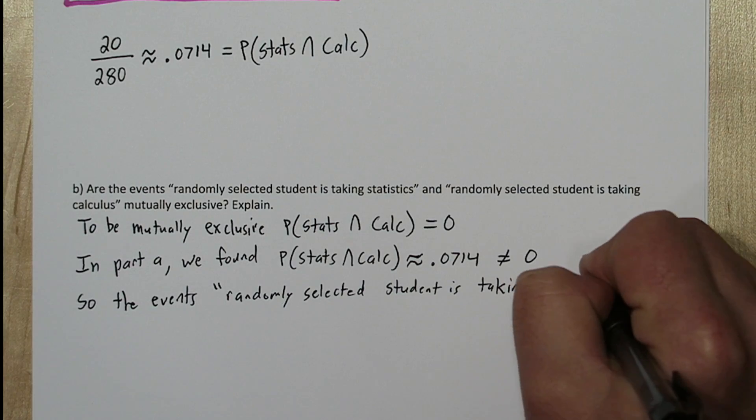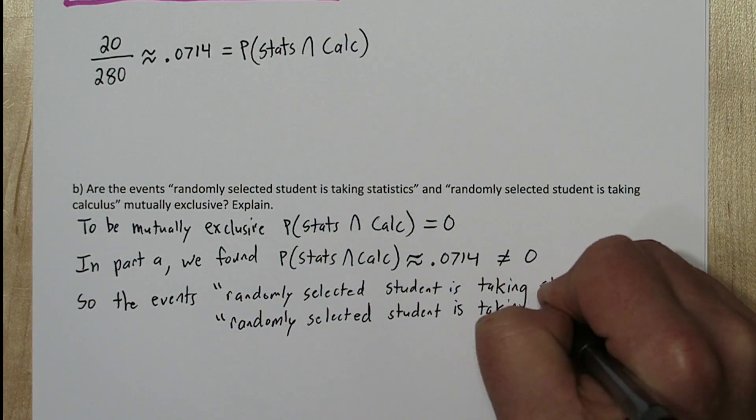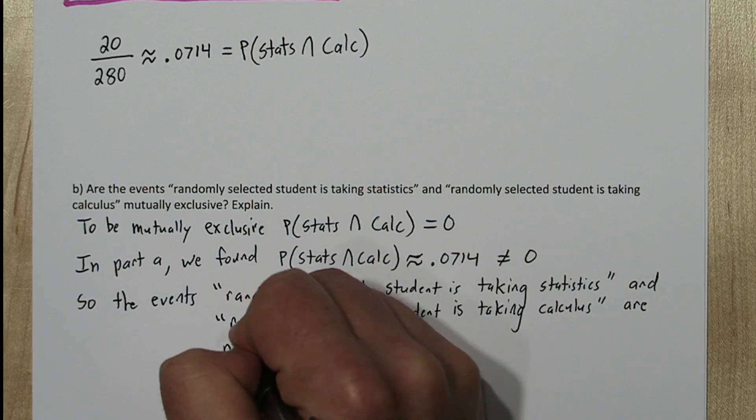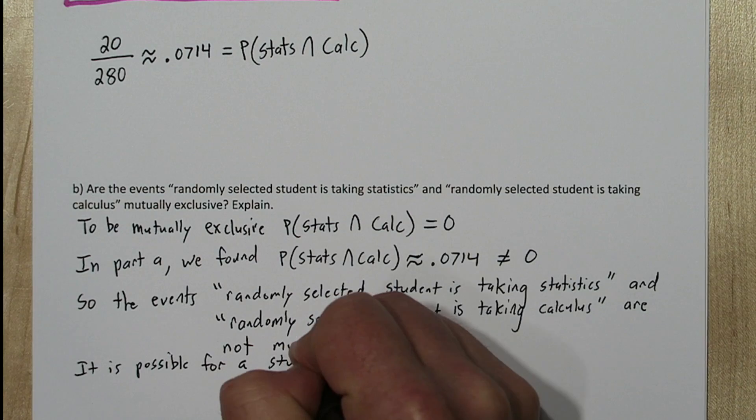So the events randomly selecting a student taking statistics and randomly selecting a student taking calculus are not mutually exclusive. It's possible for a student to be taking both statistics and calculus.